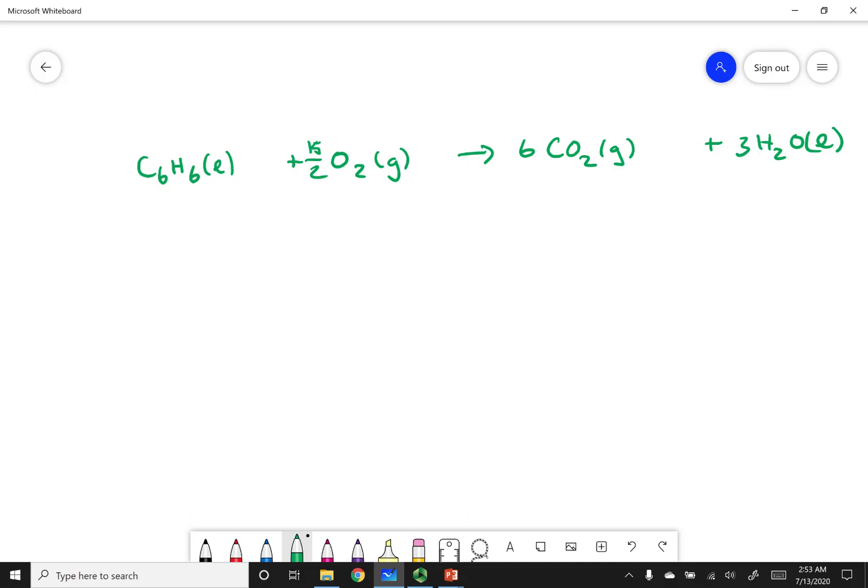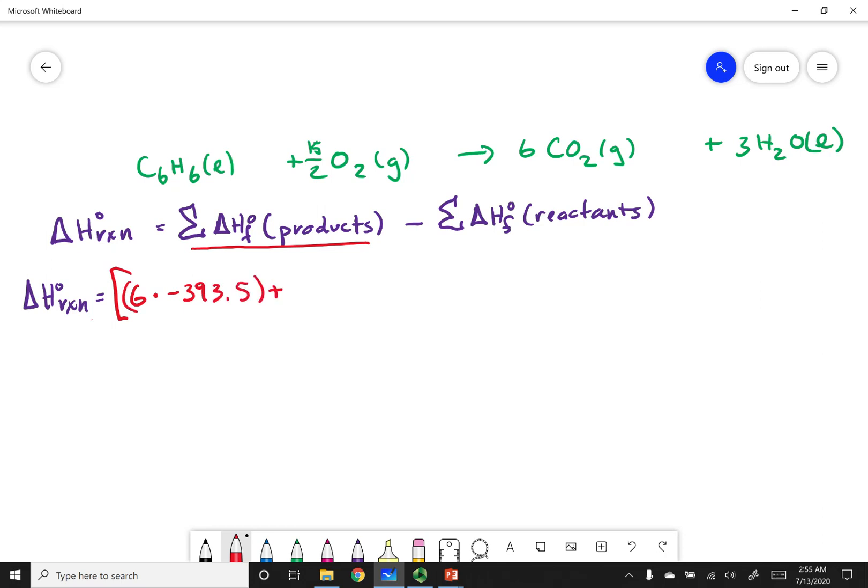Now that I have a balanced reaction, let's write that equation I want you to practice with. The delta H of this reaction equals the sum of all the delta H's of formation of all the products, and from that I subtract the summation of all the delta H's of formation of my reactants. Let's start with my products. The first product I have is CO2 gas, and there's six of them, so I take six times the delta H of formation of CO2 gas, which is negative 393.5 kilojoules. My next product is water. There are three waters, and each one accounts for negative 285.5 kilojoules.